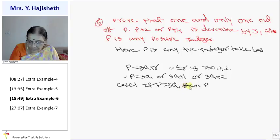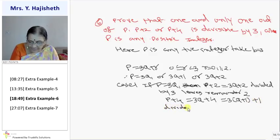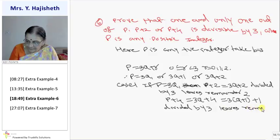But p plus 2. Then p plus 2, 3q plus 2. When it is divided by 3, leaves remainder 2. Suppose I take p plus 4, then it is 3q plus 4. That is 3 times q plus 1 plus 1. So when divided by 3, leaves remainder 1.